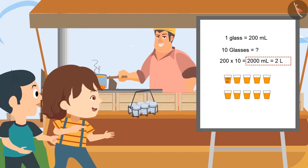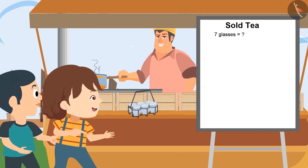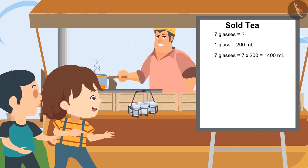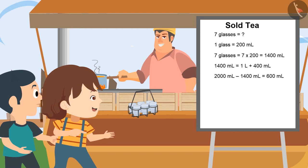Daddy, how many tea cups are sold yet? I have sold 10 cups till now. 7 cups means how much tea have we sold, Bulu? If 1 cup contains 200 milliliters of tea, then 7 cups contain 7 multiplied by 200, that is 1,400 milliliters of tea. So it means 1 liter and 400 milliliters of tea is sold. Now tell me how much tea is left? If we subtract 1,400 from 2,000 milliliters, we will be left with 600 ml of tea.